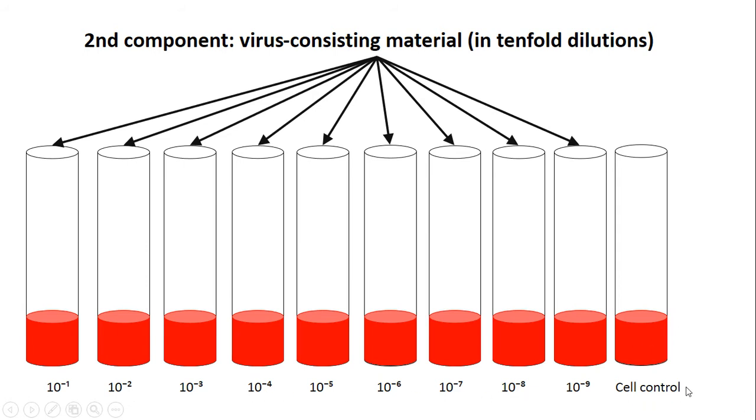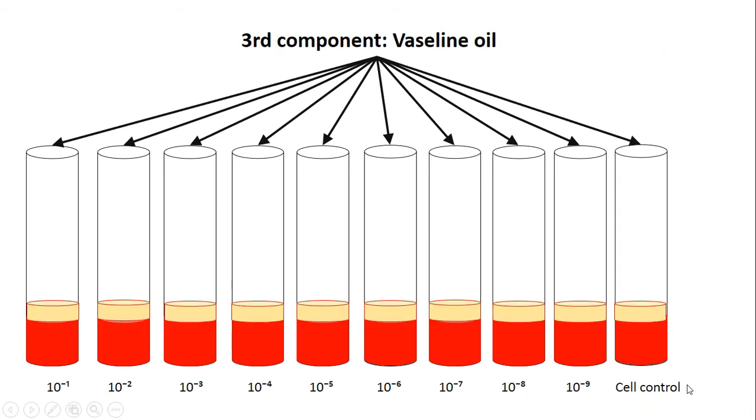We have a cell control. For isolation from atmospheric air, we add vaseline oil. We incubate in the thermostat for 72 hours.